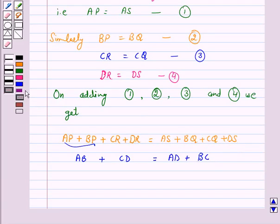Hence, we have proved the required result that is AB plus CD is equal to AD plus BC. I hope the solution is clear to you. Bye and take care.